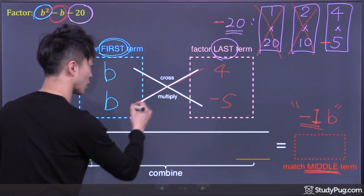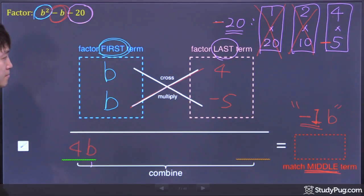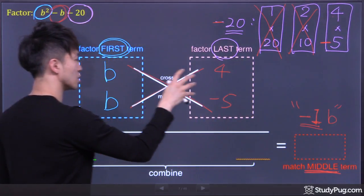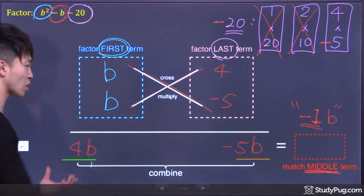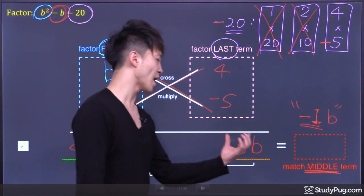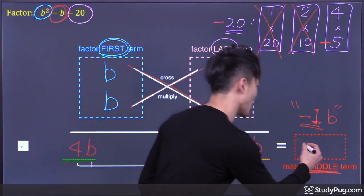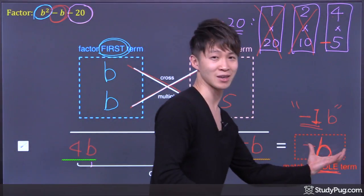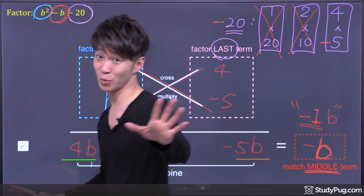Cross multiply this way. 4 times b, we get 4b. Cross multiply this way. Positive b times negative 5, we get negative 5b. Now combine these two terms. Positive 4b combined with negative 5b, we come up with negative b. Is this good or what? Negative b. That's what we're looking for. Negative b is the middle term. That's it. And we're done.